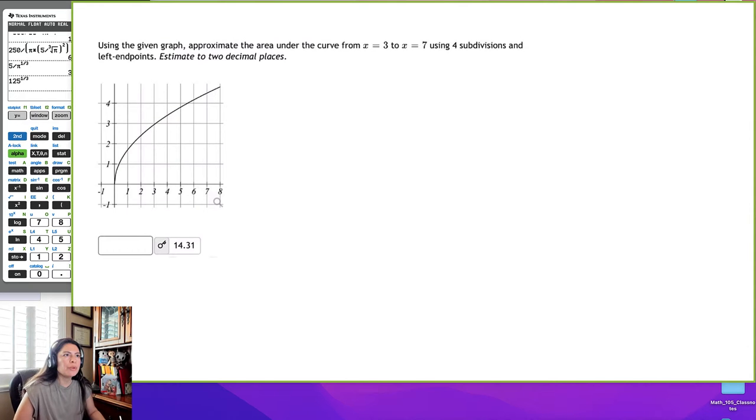Hi, so in this example, we're going to approximate the area under the curve from x = 3 to x = 7 using four divisions and left endpoints. And we'll just estimate to two decimal places. So it's an estimation, so we'll just do our best.